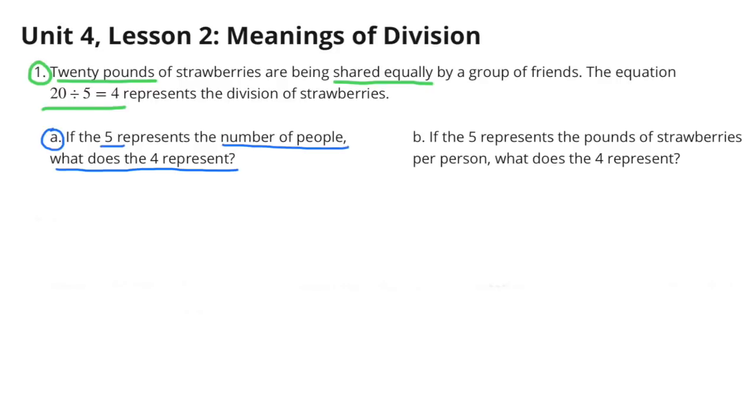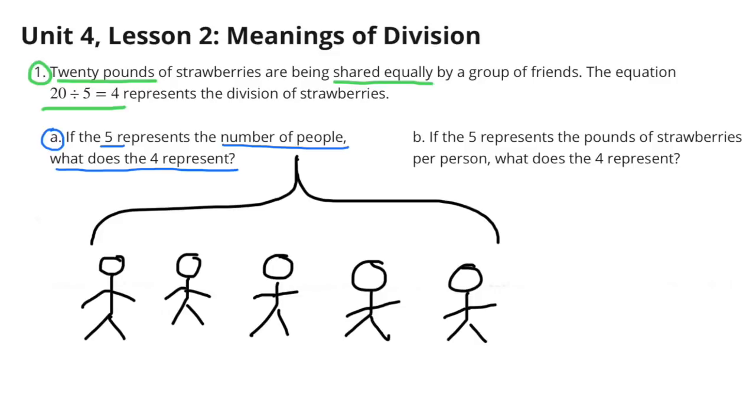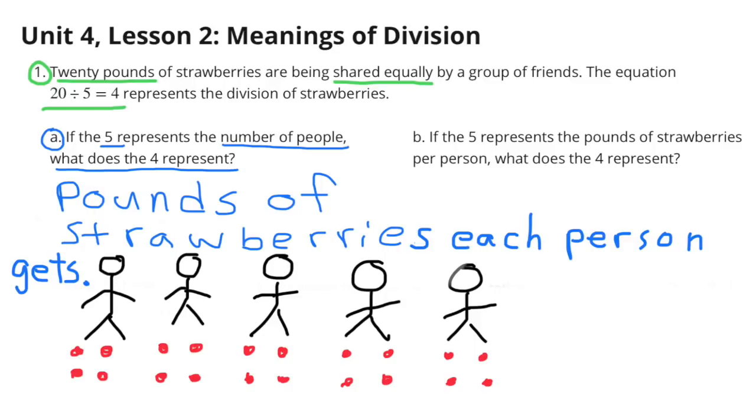A. If the 5 represents the number of people, what does the 4 represent? Here I've drawn 5 stick figures representing the 5 friends who are sharing the strawberries. The 4 would represent 4 pounds of strawberries. Each of the friends gets 4 pounds of strawberries.